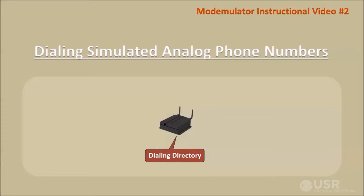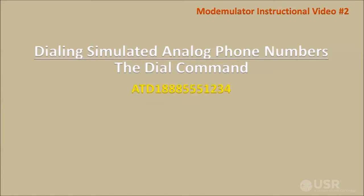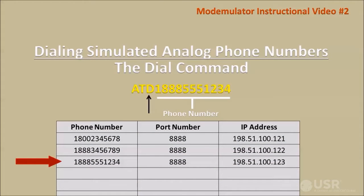Once entries have been made into the dialing directory, the Modemulator can receive a dial command from the legacy application. The dial command uses the same format as an analog modem — the letter D followed by a phone number. When the Modemulator receives this command and the phone number has a matching entry in the dialing directory, the Modemulator will use the IP address from that entry to connect through the cellular network to a destination port. This is the essential purpose of the dialing directory: to receive a dial command and translate it to an IP address.